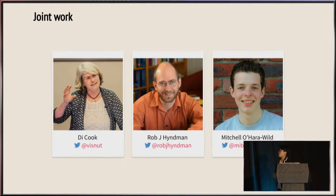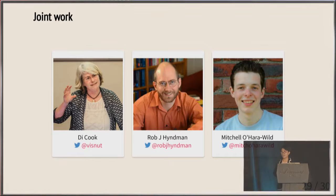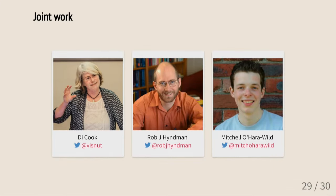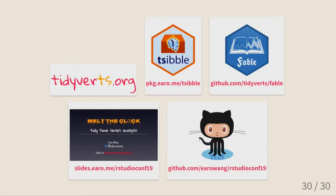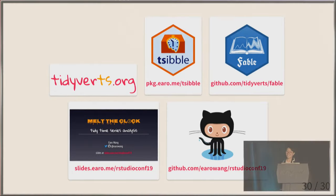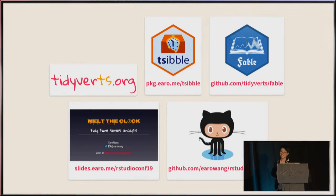This is joint work with Di Cook, Rob Hyndman, and Mitch O'Hara-Wild. Tsibble is on CRAN, but Fable is on GitHub at the moment. They all belong to tidyverts.org. Those are the useful links to the packages, my slides, and the source code behind the slides. That's all from me. Thank you.